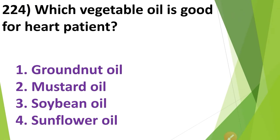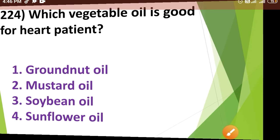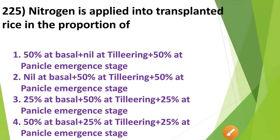Which vegetable oil is good for heart patients? 1. Groundnut oil, 2. Mustard oil, 3. Soybean oil, 4. Sunflower oil. The vegetable oil which is good for heart patients is Option No. 4 — sunflower oil.